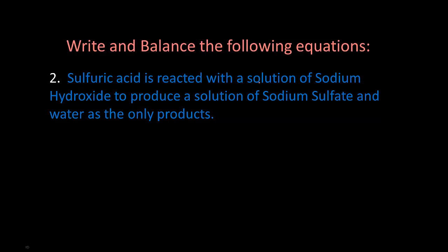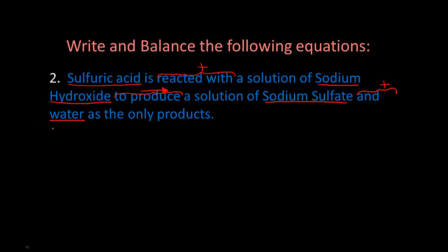We have: sulfuric acid is reacted with a solution of sodium hydroxide to produce a solution of sodium sulfate and water as the only products. The first thing we do is write the formulas for our reactants. So sulfuric acid is one reactant, plus sodium hydroxide, then an arrow, then sodium sulfate, and water as products.